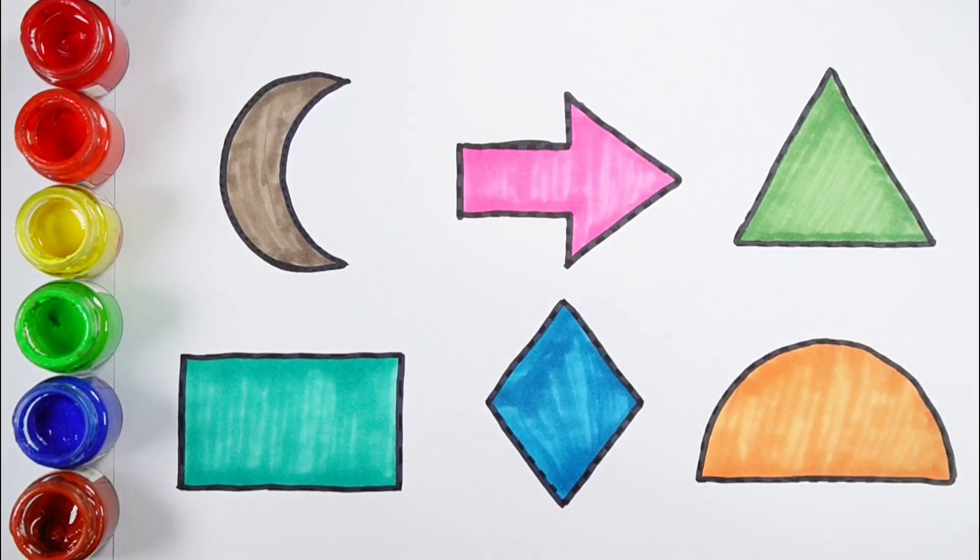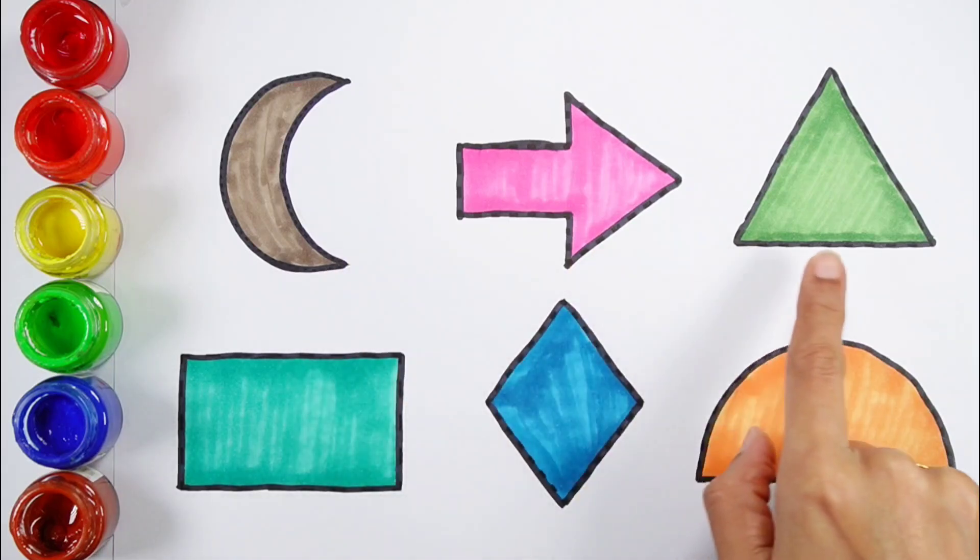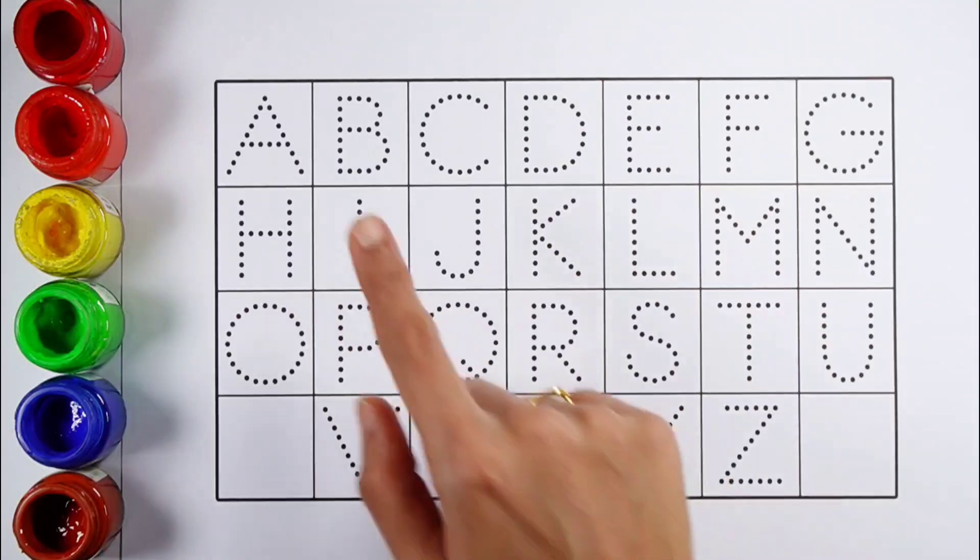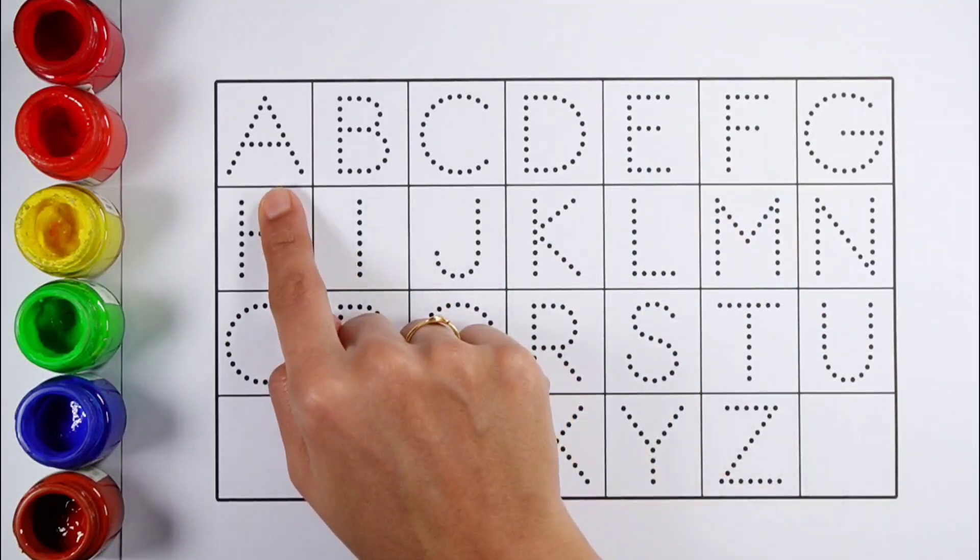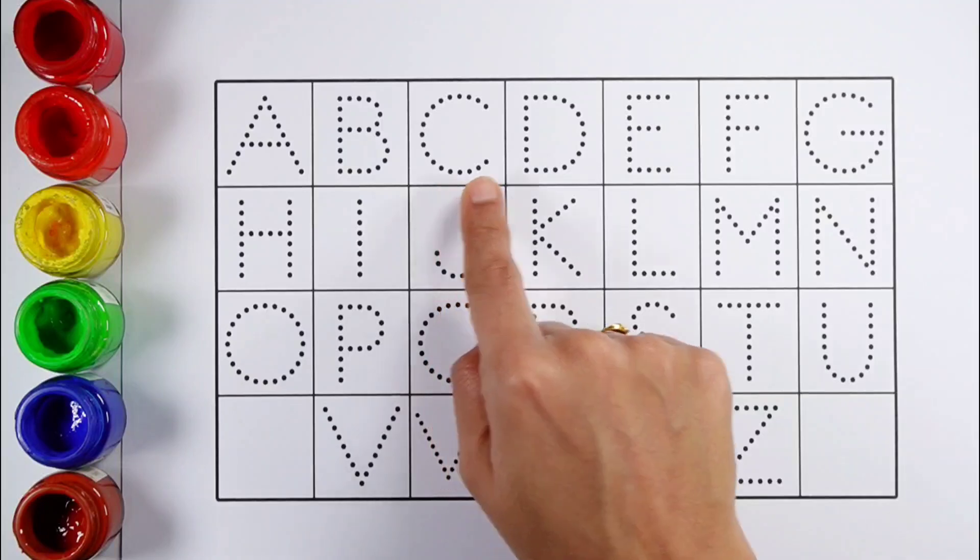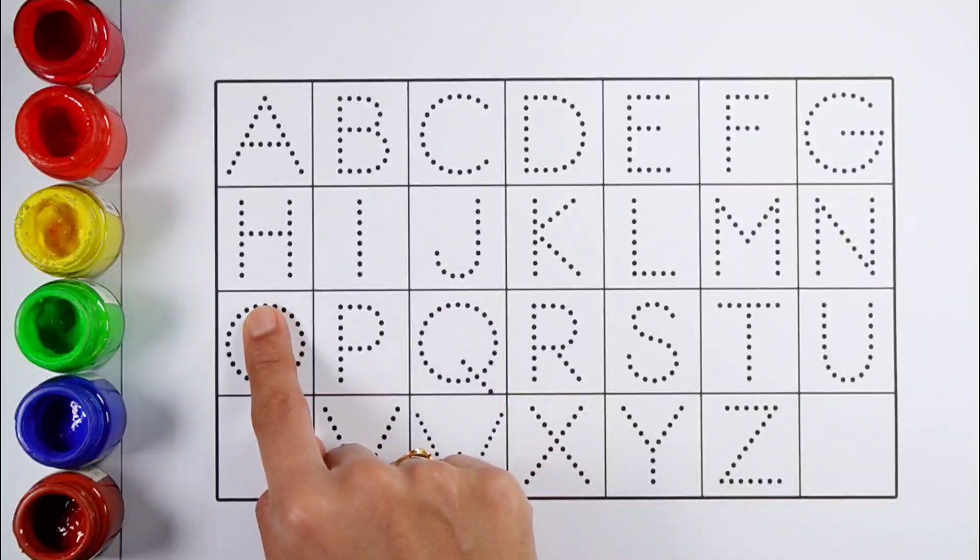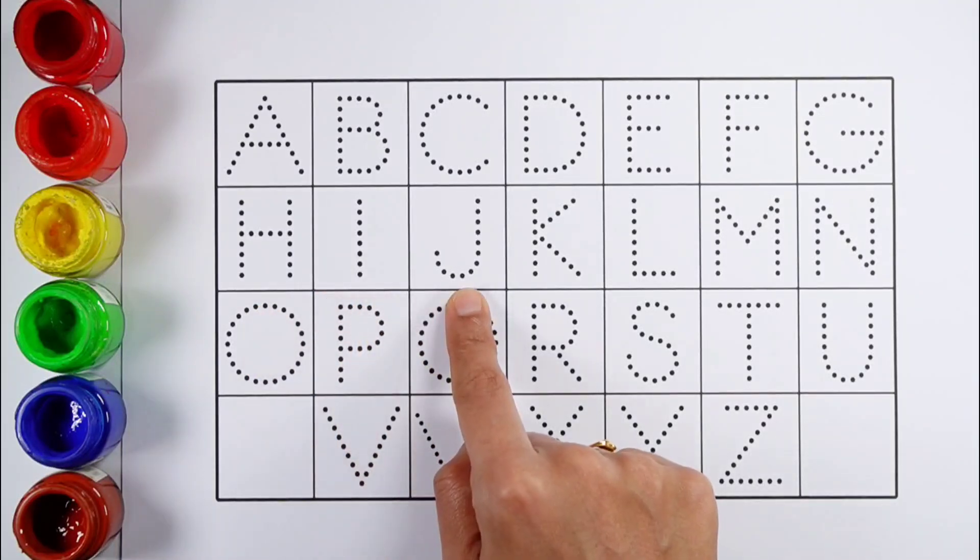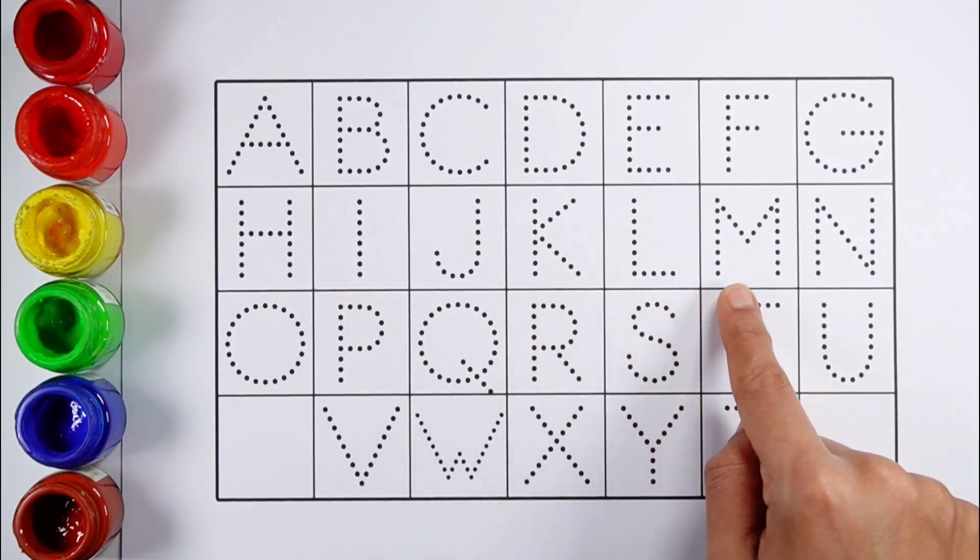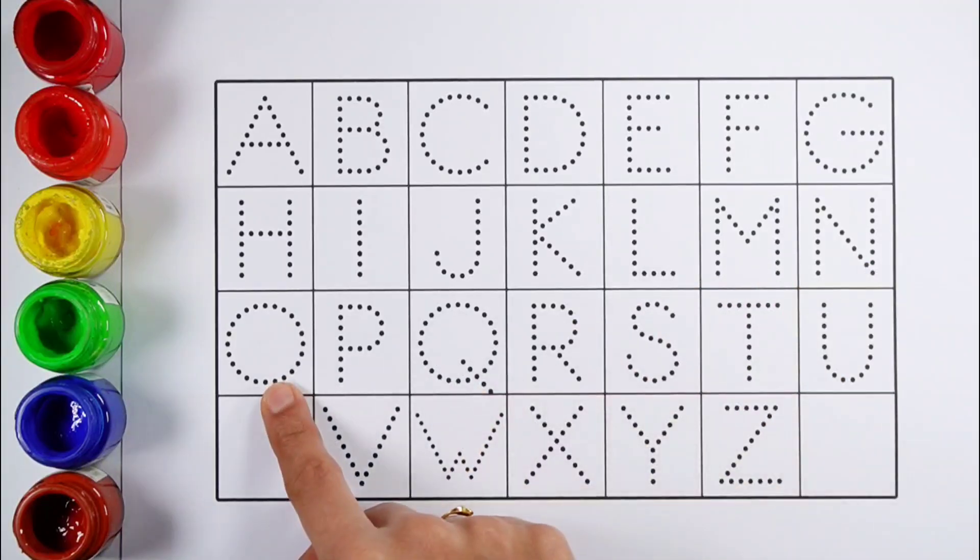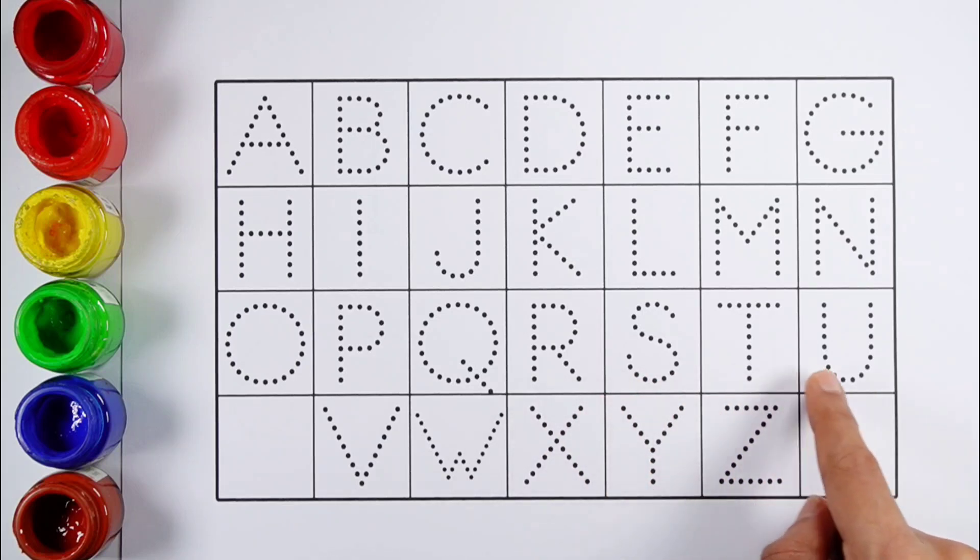Semi-circle Crescent Arrow Triangle Rectangle Rhombus Semi-circle. Let's Learn Alphabets. A B C D E F G H I J K L M N O P Q U R S T U V W X Y Z